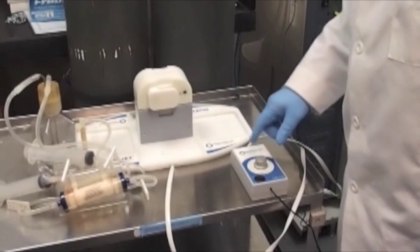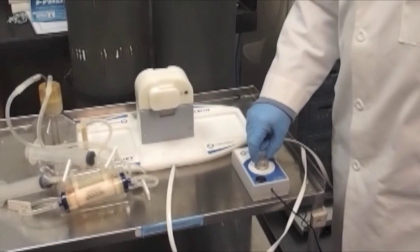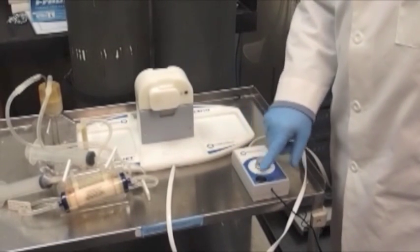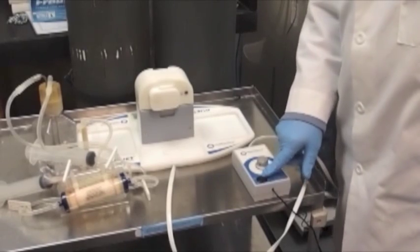We have the flow rate control box and the flow rate control knob, which adjusts the speed of the media recirculation through the cartridge, and an on-off switch.